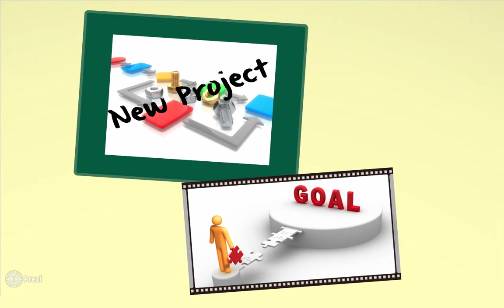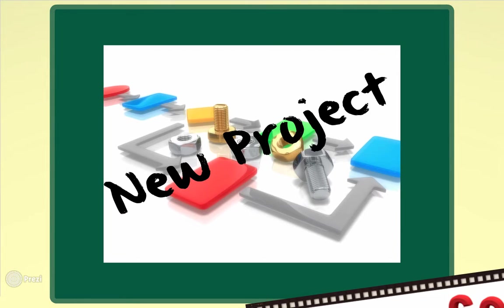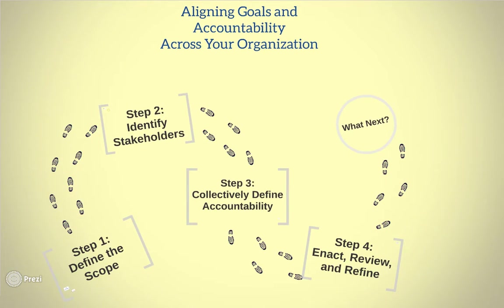You can use the Aligning Goals and Accountability tool when setting goals and rolling out a new project or initiative, or when investigating where a particular goal is not being met. There are four major steps to completing the Aligning Goals and Accountability tool.